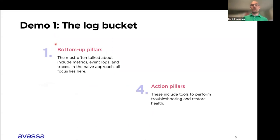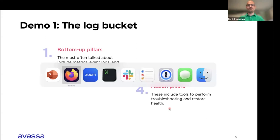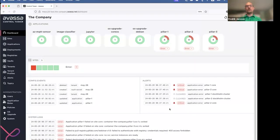That brings us to the demos. The first one I'm going to look at is the log bucket. We have a problem and we're going to look at the logs to try to figure out what's happening. Since I'm aiming to fix this during the demo, I'm also including pillar four — being able to fix the problem. I'll now switch to the web UI. Here I'm at the landing page in our dashboard, and you can see these are the applications we'll be working on today. There are quite a few red things — bad things going on here. First and foremost, we can see that Pillar 1 has an issue, so that's what we're going to look at.